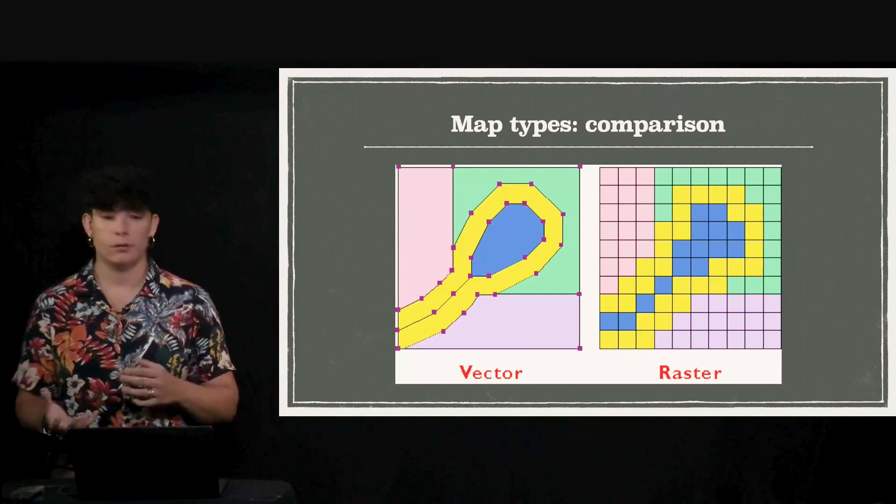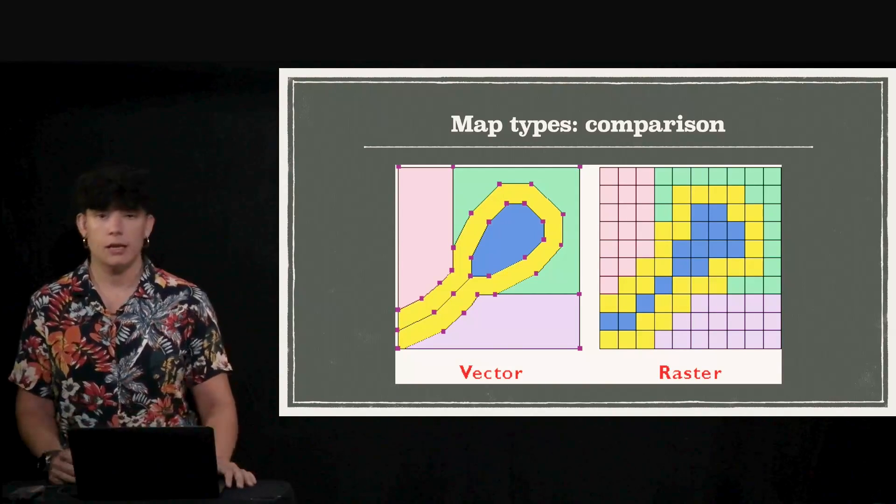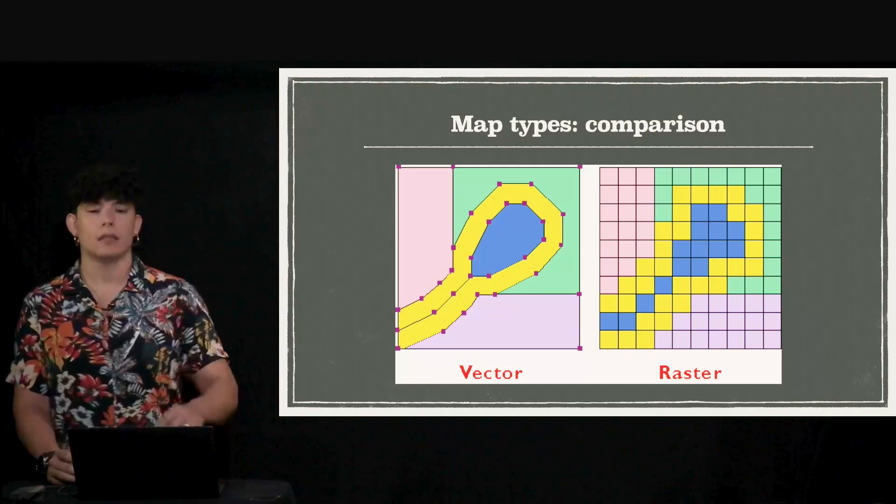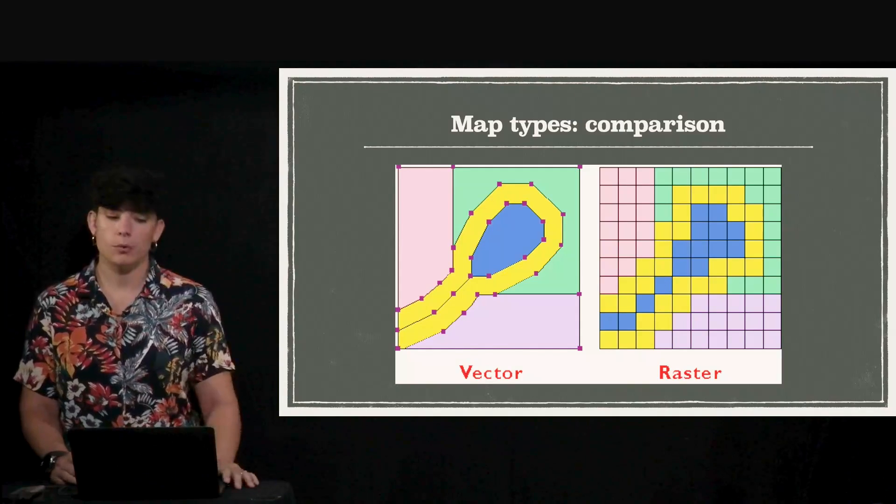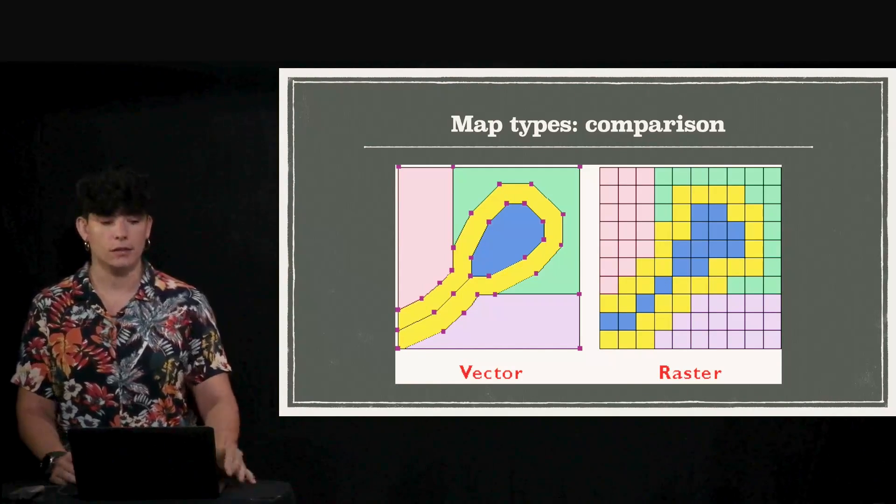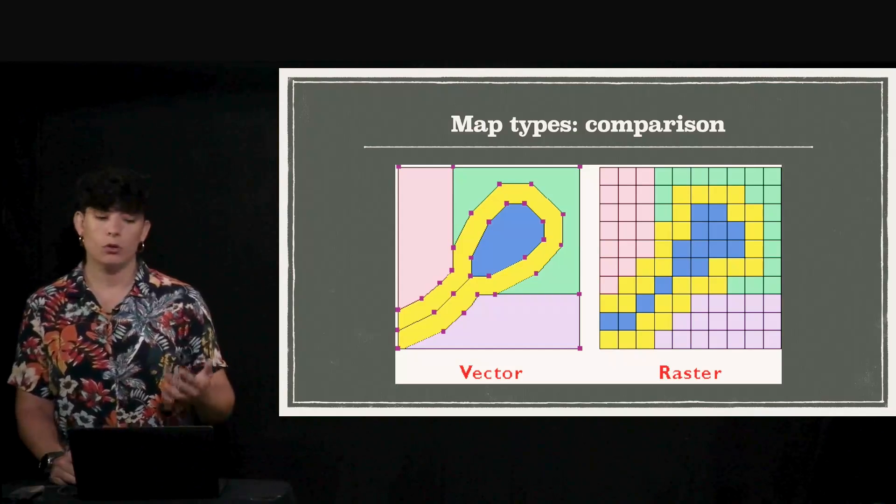That might affect how the different forms are represented. So in case we are interested in the shape of the objects, maybe we would go to a vector map, but if we are interested in the content of the map, we would go to raster representations.